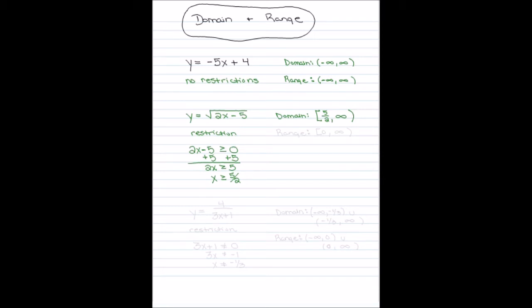Your range is something that you have to think about also. If you think about the lowest value that you can take the square root of, the lowest value is zero, and if you take the square root of zero, you get zero. If you go any lower than zero, then you're going to be taking the square root of a negative number, which you can't do — it gives you an imaginary number, and we want completely real numbers. So our range is going to be zero to infinity.